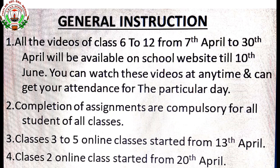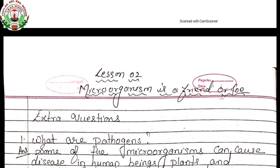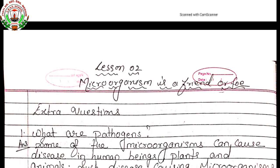For the summer vacations, you will get some assignments for every subject, and completion of those assignments is compulsory. This assignment will be included in the activity and contains marks as well. Third point: classes 3 to 5 online classes started from 13th April, and class 2 online classes started from 20th April. Please follow these general instructions and get your attendance.